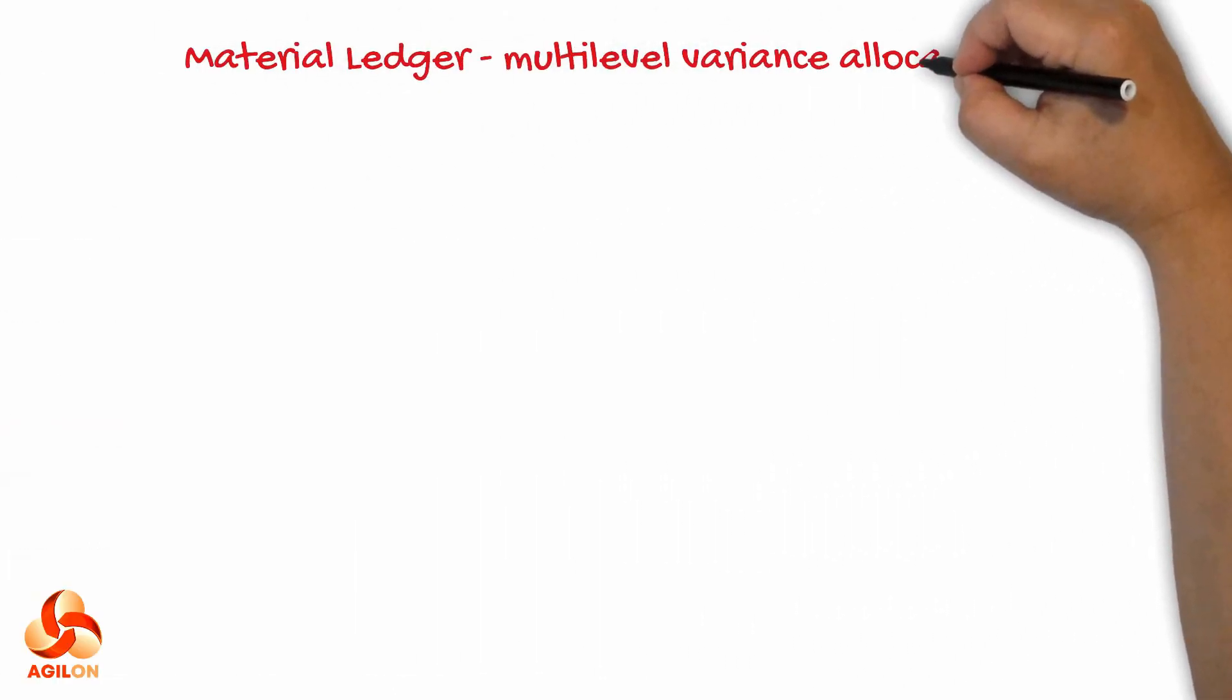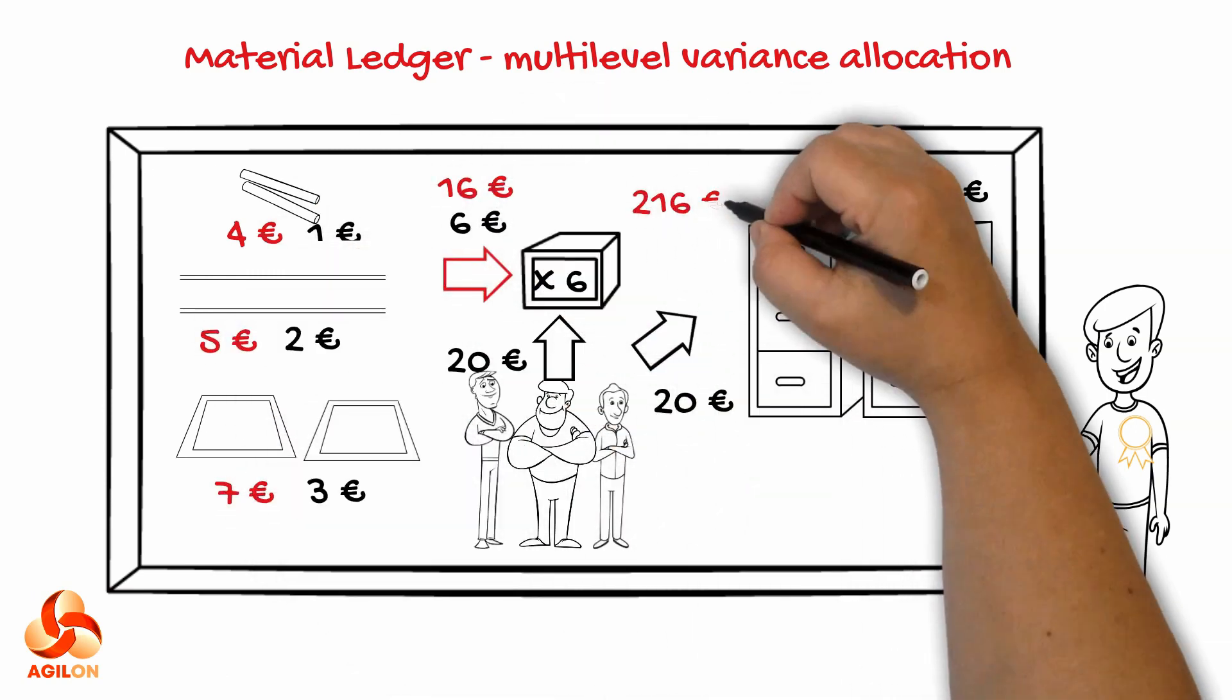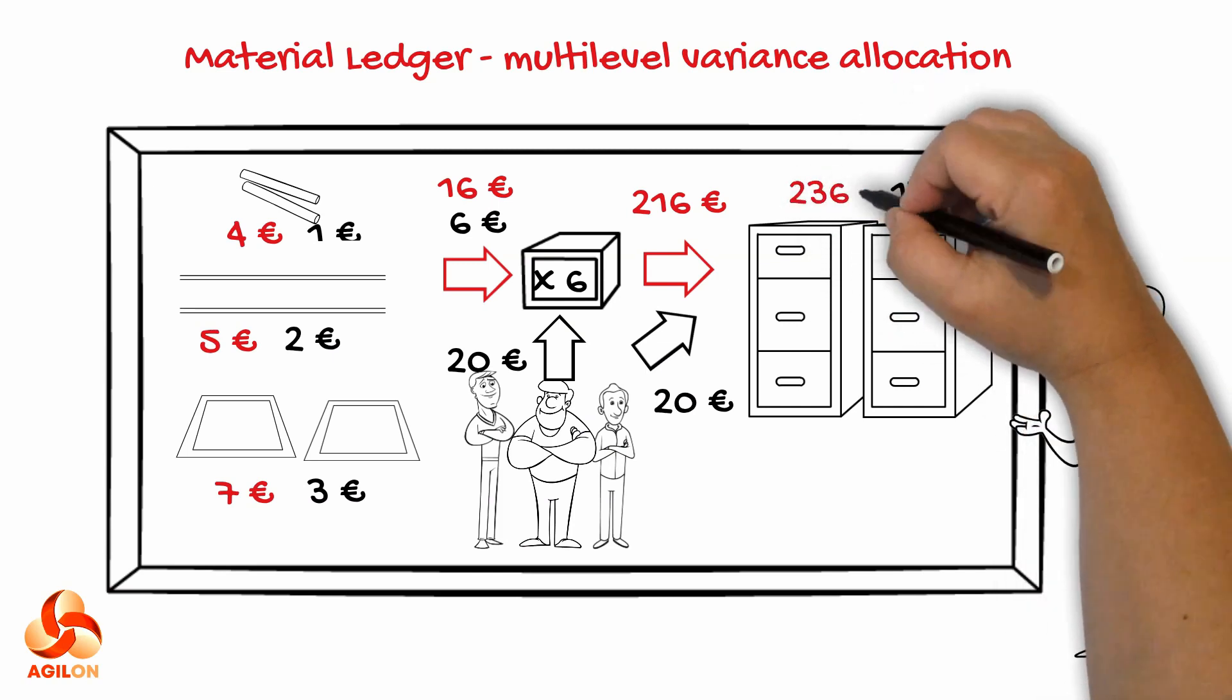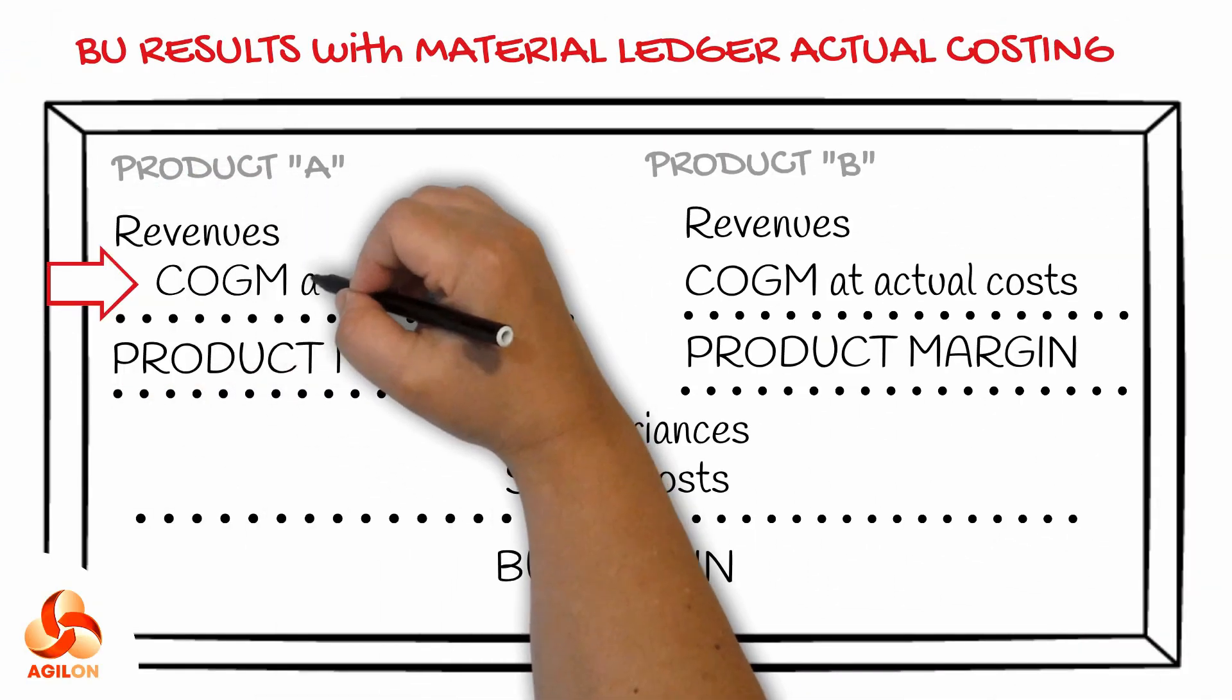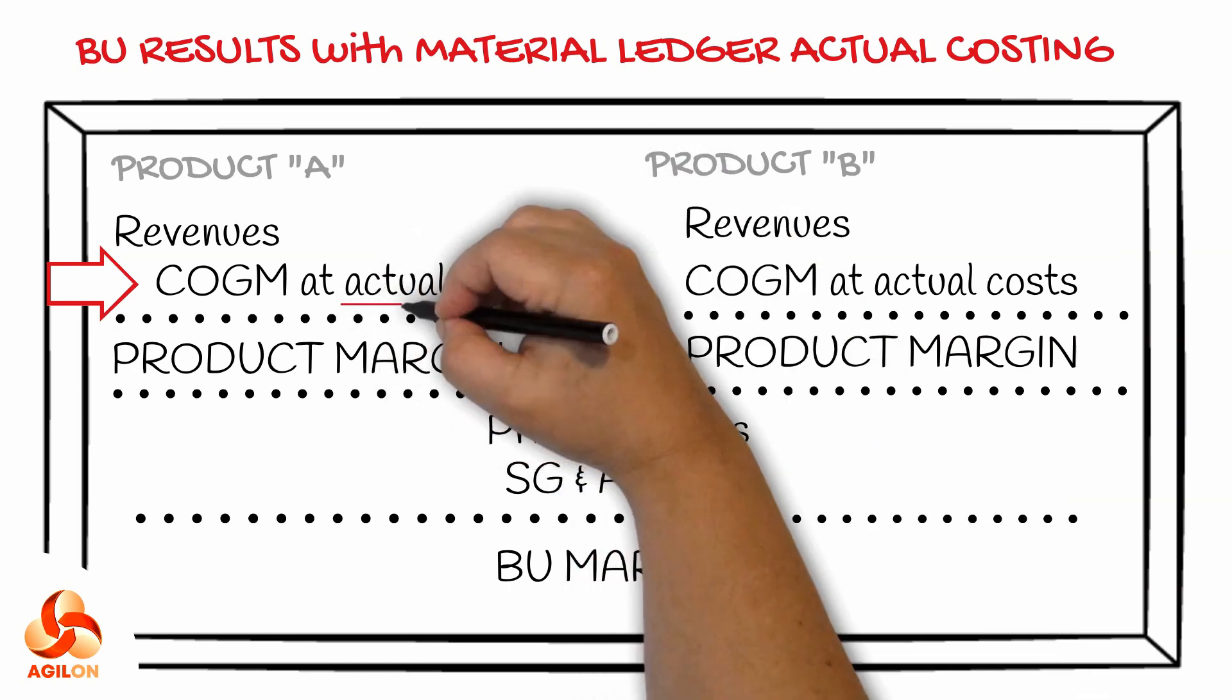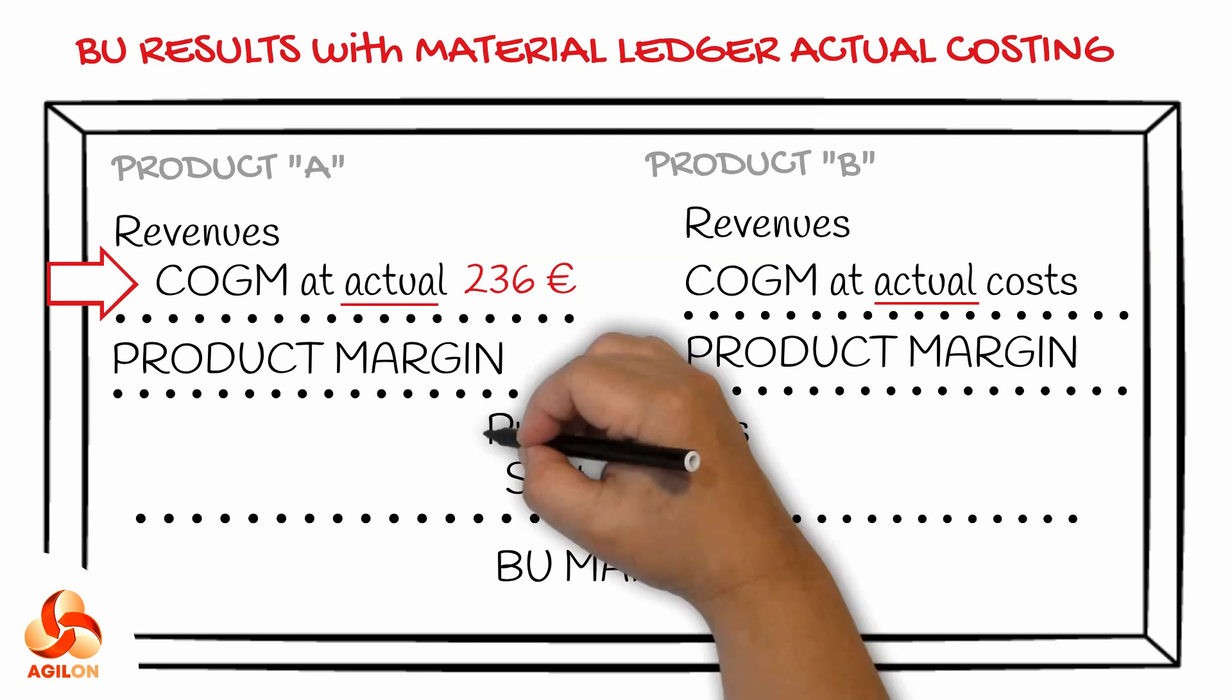With material ledger, the purchase price variance will be allocated to semi-finished and finished materials. The same thing will happen when irregularities in production occur. The standard product costs will be re-evaluated in consideration of all variances, and the actual product costs, including these variances, will appear on the profitability report on the product levels.